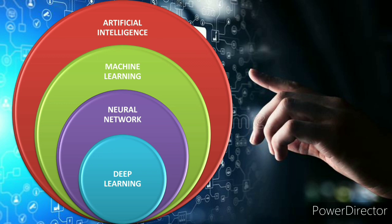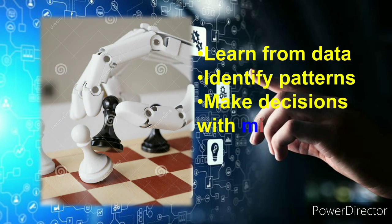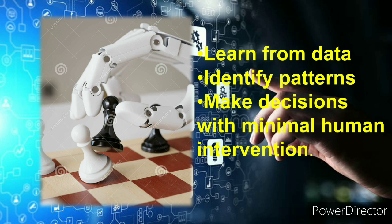Machine learning works by providing a proper analytical basis for restructuring a model so that a machine can automatically identify a structure, and the model can be built based on previous pattern recognition. The key things are: learn from data, identify the patterns, and make decisions with minimal human intervention. That means we are not going to program everything explicitly — the machine takes care of its previous experience and based on that it restructures the logics and models. Algorithms are to be built and restructured by the machine itself based on previous algorithms.